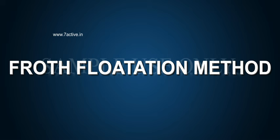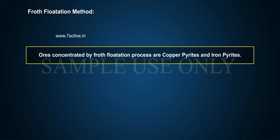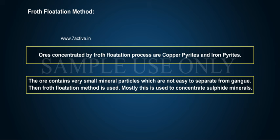Froth Flotation Method: Ores concentrated by the Froth Flotation process include copper pyrites and iron pyrites. The ore contains very small mineral particles which are not easy to separate from gangue, so the Froth Flotation Method is used. Mostly, this is used to concentrate sulfide minerals.